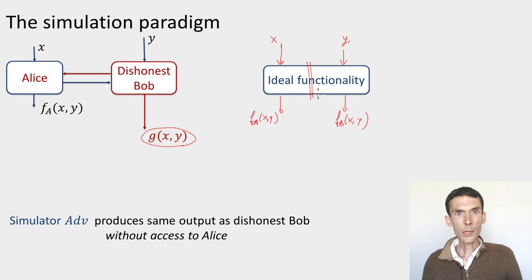What does it mean? We want to say that whatever a dishonest Bob can do in a real implementation in the protocol, he could also do if instead of having access to Alice, he had access to the ideal box. But the ideal box being ideal, there's nothing really malicious he can do if he can only interface with the ideal box. And so then we'll say that the protocol is secure. Let's make this a little bit more precise. We want to say that whatever dishonest Bob does, so if I put a little box here around him, this I can replicate in the ideal world using something called the simulator.